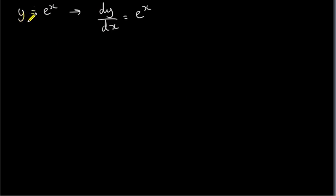In the last video, we saw that for the function y equals e to the power of x — which I explained in great detail where this function comes from — its derivative is itself: dy/dx equals e to the power of x.